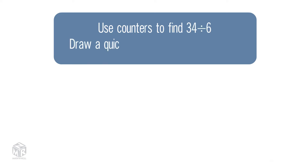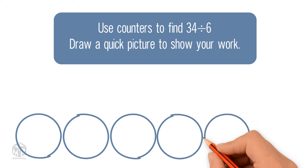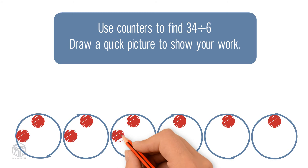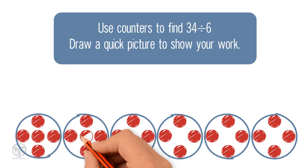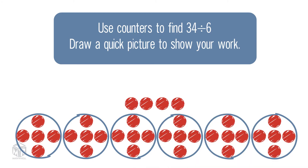Let's try another example. Use counters to find 34 divided by 6. Draw a quick picture to show your work. First, we draw 6 circles to represent the divisor. Now we share the counters equally amongst the 6 groups. We have 5 counters in each group with 4 counters remaining. 4 is our remainder.